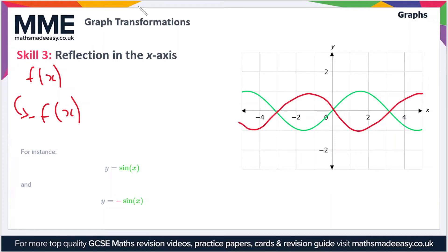As I've said, what we are essentially doing here is we're taking every positive y value, turning it negative, and we're taking every negative y value and turning it positive. The effect of which is a reflection in the x-axis.